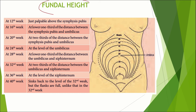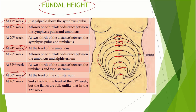Next we move on to fundal height measurements. At 12 weeks, the fundus will be just palpable above the pubic symphysis. At 16 weeks, fundal height will be at the lower one-third of the distance between the pubic symphysis and the umbilicus. At 20 weeks, it will be at two-thirds of that distance. By 24 weeks, it will be at the level of the umbilicus. At 28 weeks, it will be at the lower one-third between the umbilicus and the xiphisternum. At 32 weeks, it will be at the upper one-third between the umbilicus and the xiphisternum. At 36 weeks, it will be at the level of the xiphisternum. At 40 weeks, the fundus is slightly lower than at 36 weeks but the flanks will be full.